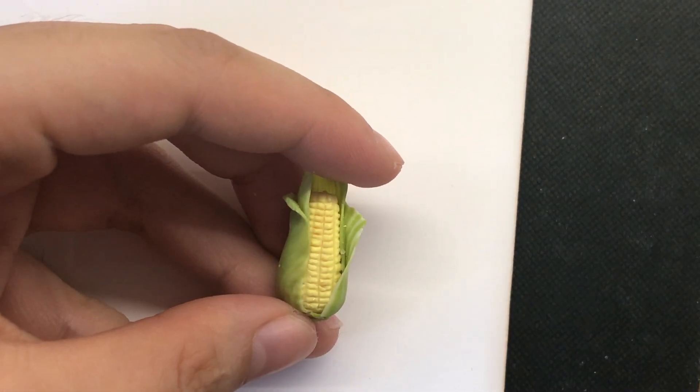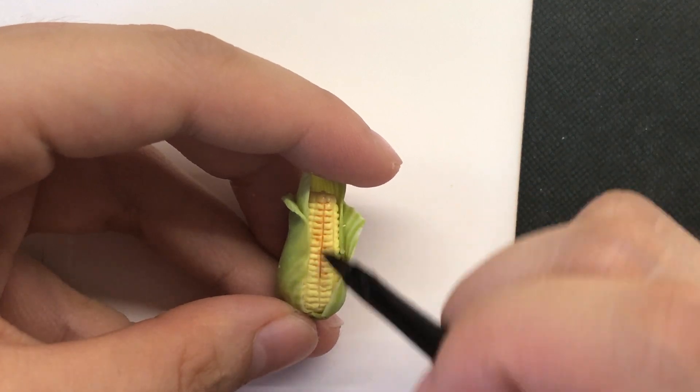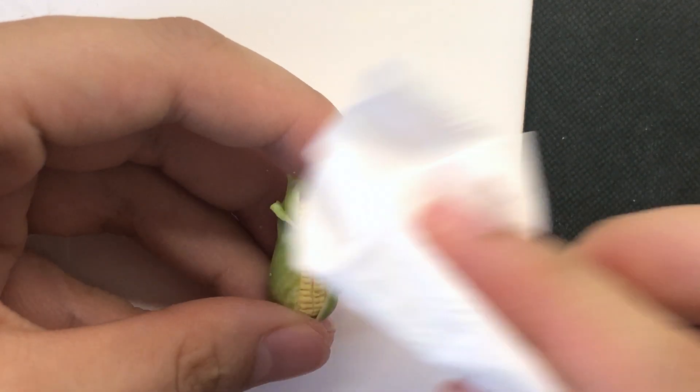In here, I'm adding a little bit of watered-down brown acrylic paint to add more shading and shadows to the corn.